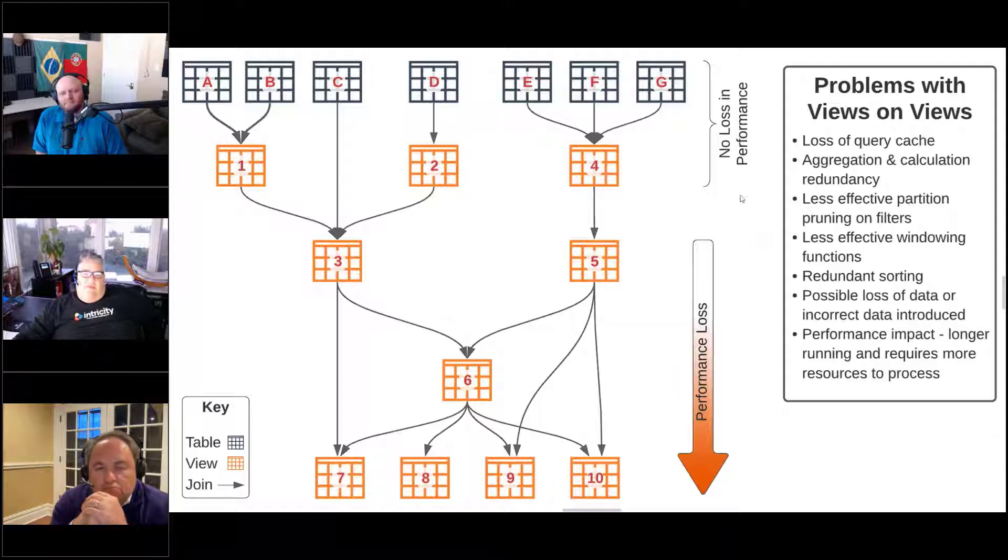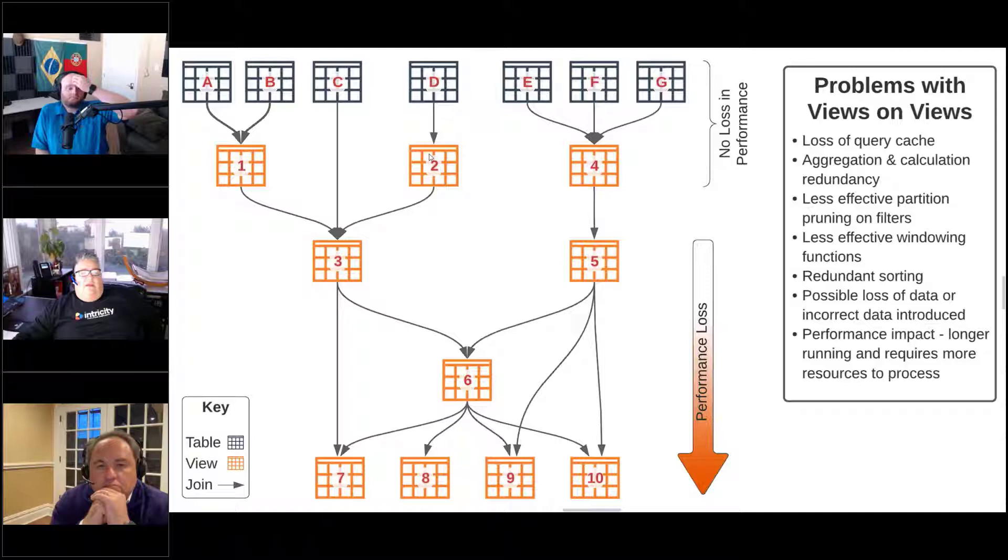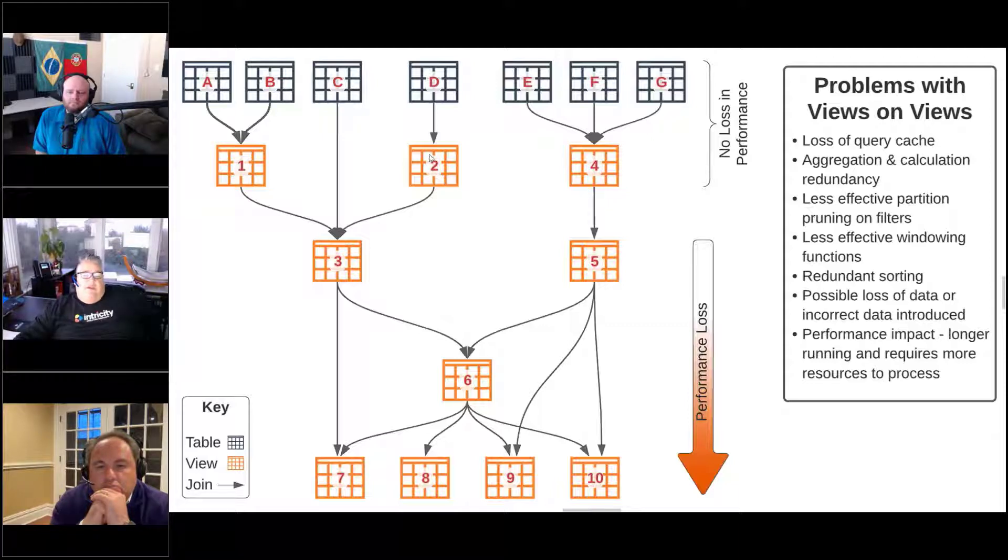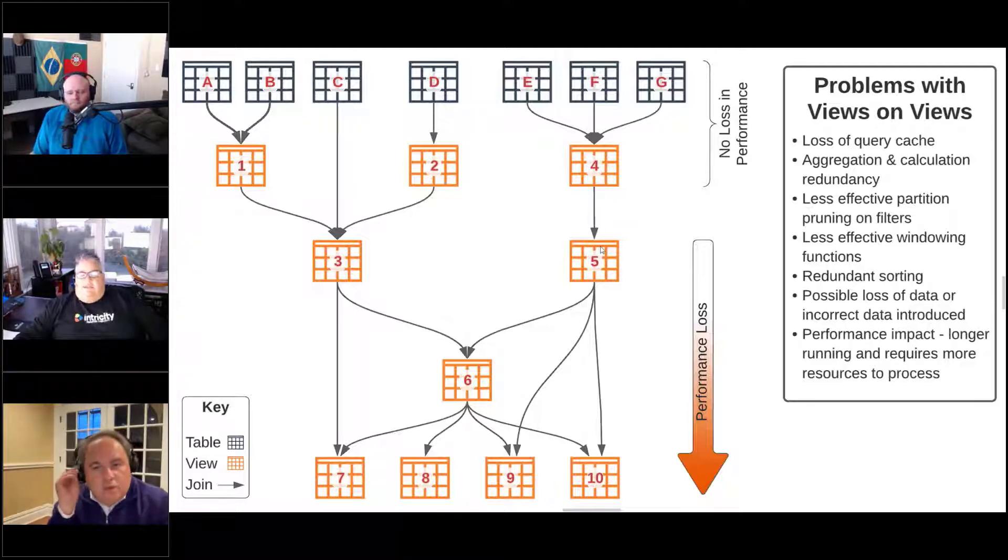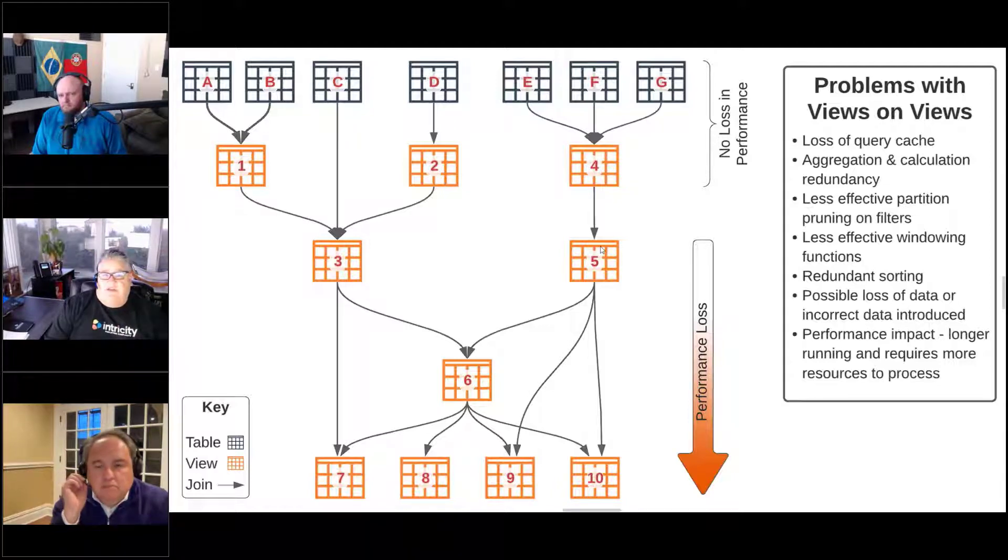What happens is in the example that we've got here, across the top we've got some tables - table A through table G, and then we've got some views on those. When we're doing just a layer of views on top of tables we don't really see any issues. But as we go further, views on top of views on top of views joining those together, the complexity gets to the point where there are a number of challenges that come into play, especially when we're talking about Snowflake.